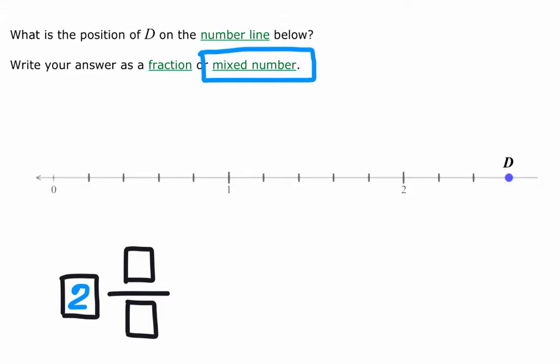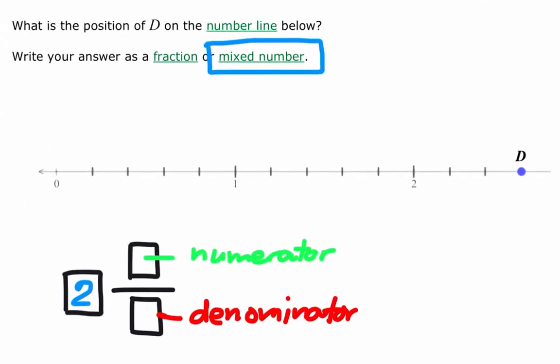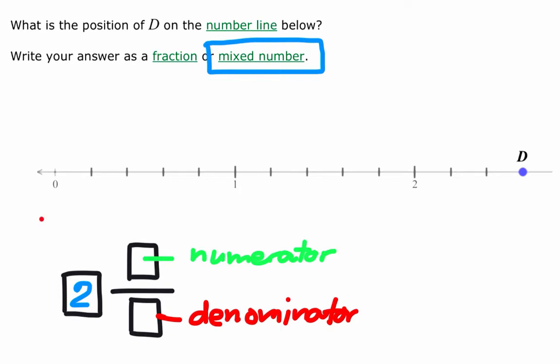And now we have to look for the denominator of the fraction as well as the numerator. Let's start looking for the denominator. Let us look at the space between 0 and 1, which are 1, 2, 3, 4, 5. So the space is divided into 5 equal parts. This 5 equal parts represents the denominator of the fraction.